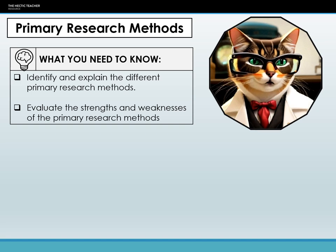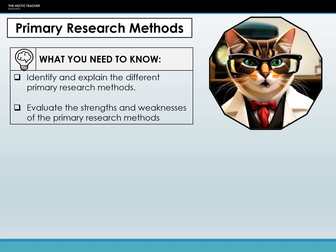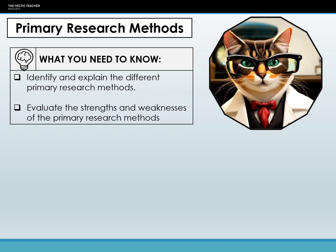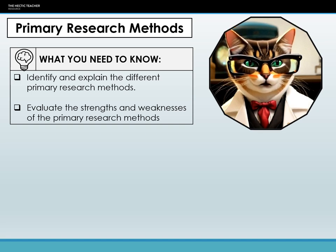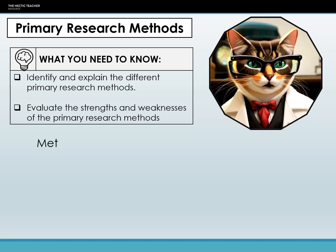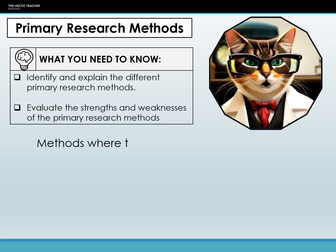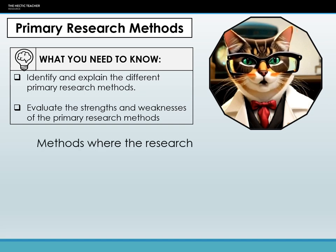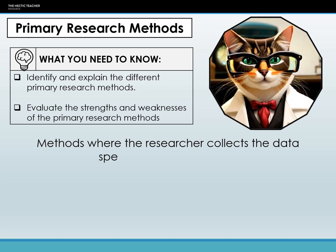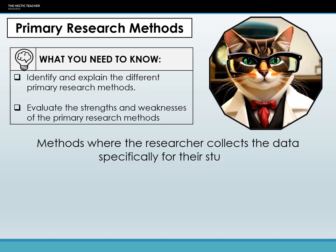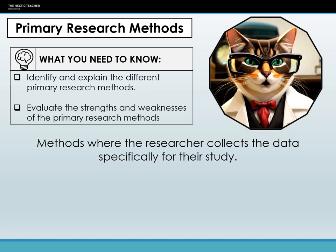Hello, and welcome to this video on primary research methods in sociology. A primary research method is one where the researcher collects data specifically for their study. They may go out and collect this data themselves or have research assistants do it for them.